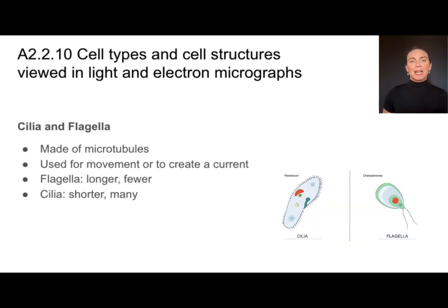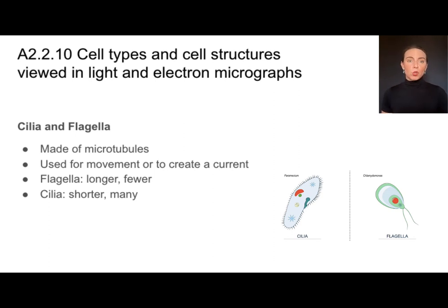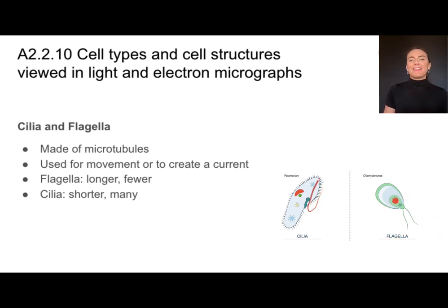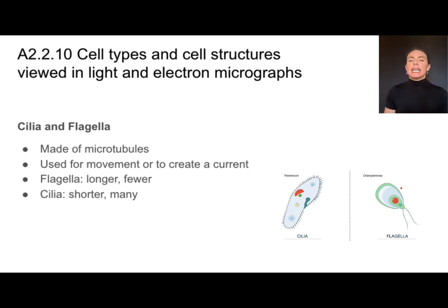The last cell structure to focus on is cilia and flagella, which are really made for movement. They are made out of microtubules. A flagellum creates a whip-like motion, while cilia work together to create a current. To tell the difference: if it's a flagellum, there will probably be just one or two and they'll be much longer. Cilia will be many, lining the outside of the cell, and much shorter.